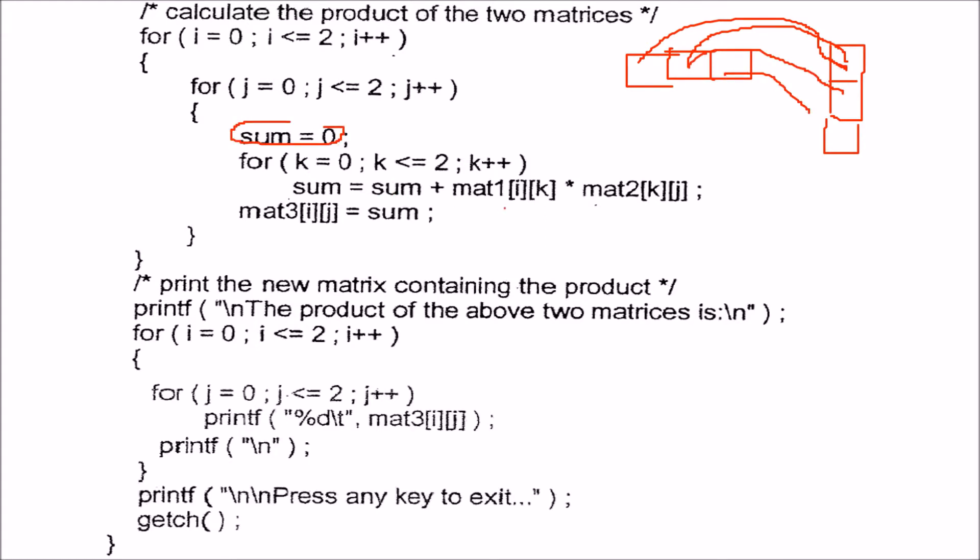We are doing exactly the same stuff. We are adding it, but what we are doing here is mat[i][k] is multiplied by mat[k][j]. So i is the row, k is the column, and k is what we just told you.